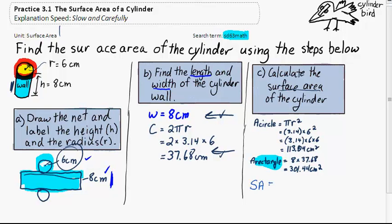We can write the surface area. We must add up the circle twice, top and bottom, 113.04, and the area of the rectangle which we just worked out, 301.44. All together, this adds up to the surface area, 527.52 cm squared. Thanks.